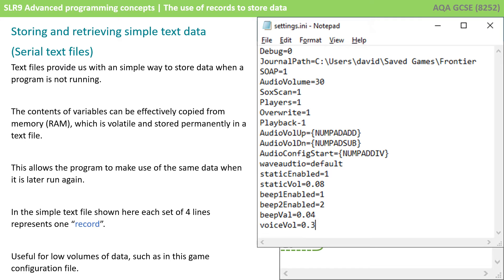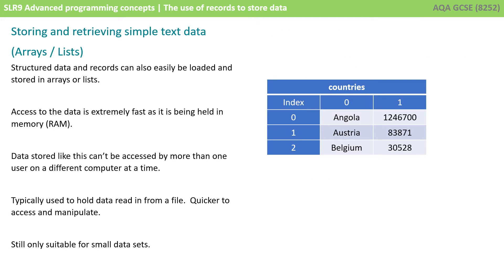Simple text files stored in this way are useful for low volumes of data, such as a game configuration file. Structured data and records held in simple text files can also easily be loaded and stored into arrays or lists. Access to this data is extremely fast once it's been loaded from the text file into an array or list in memory.